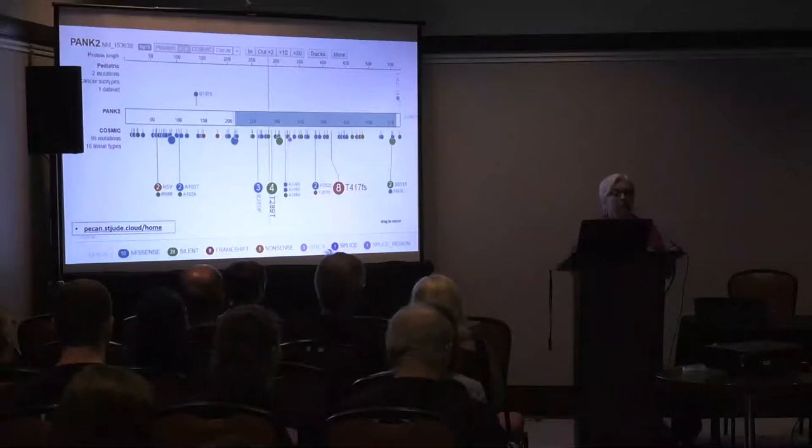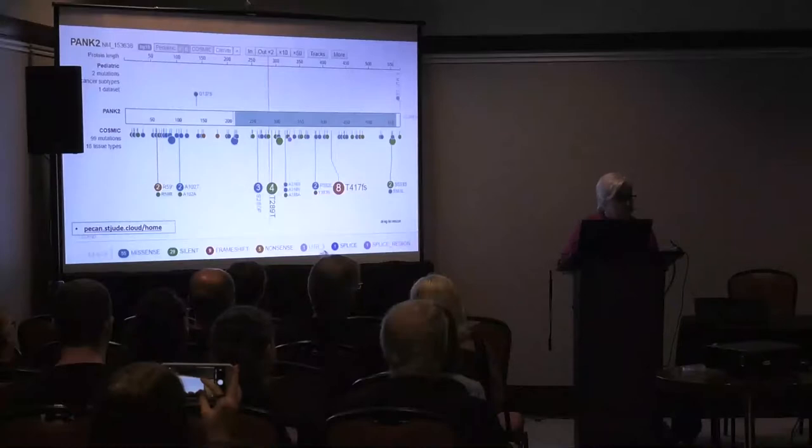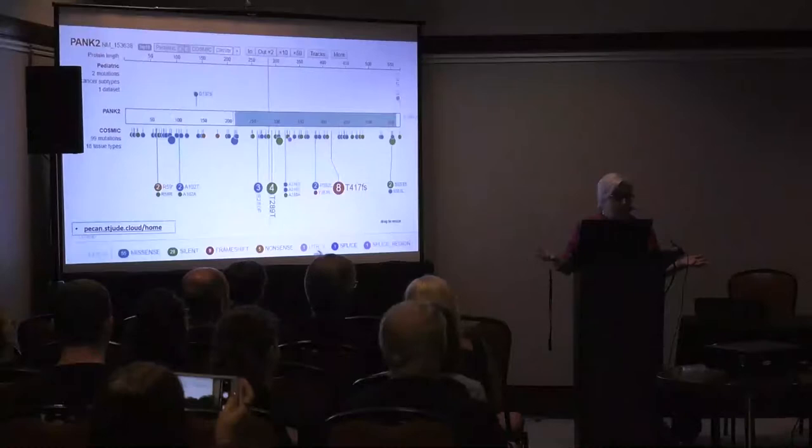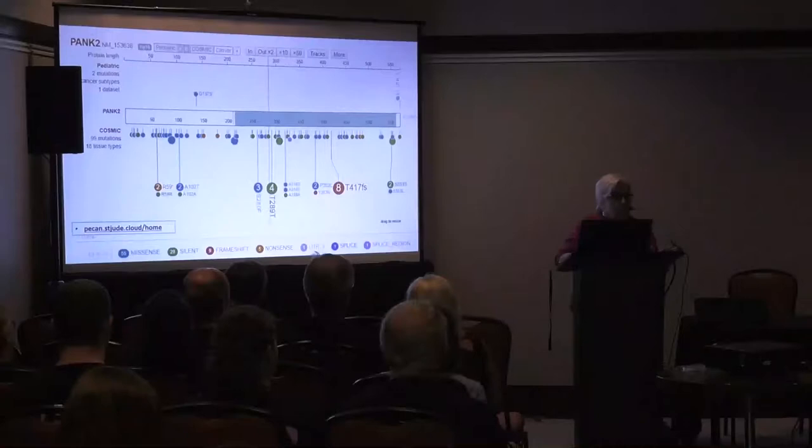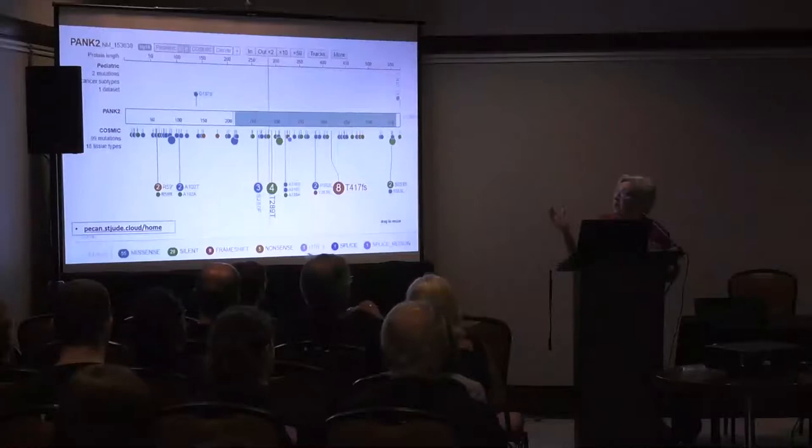This protein has a very important role: it initiates coenzyme A biosynthesis in every single organism we know about, from bacteria up through mammals. In mammals it's more complicated. This is called PAN-K2 because there are two other PAN-Ks in mammals — PAN-K1, PAN-K2, and PAN-K3.